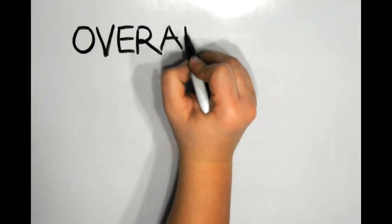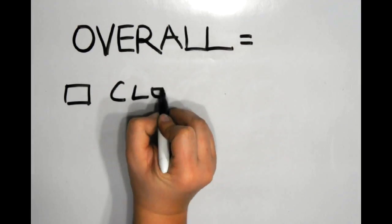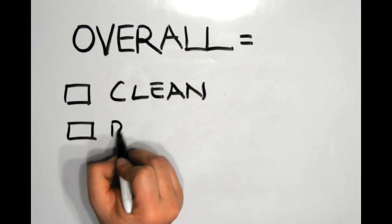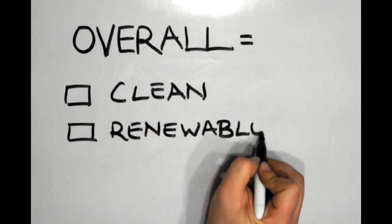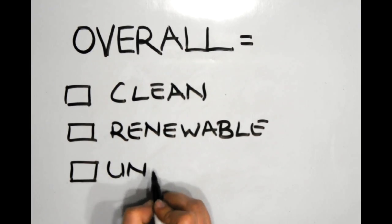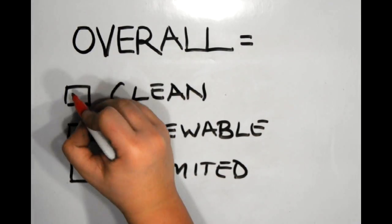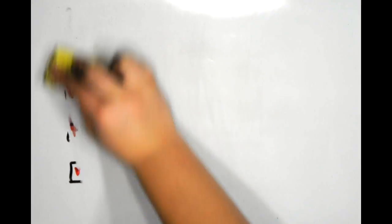Looking at the overall environmental implications, it can be seen that while solar energy does have land use concerns and potential chemical threats to the environment, its benefits surpass its concerns. Unlike other energy sources such as coal and natural gas, it produces a clean and renewable energy that is overall a beneficial energy solution.